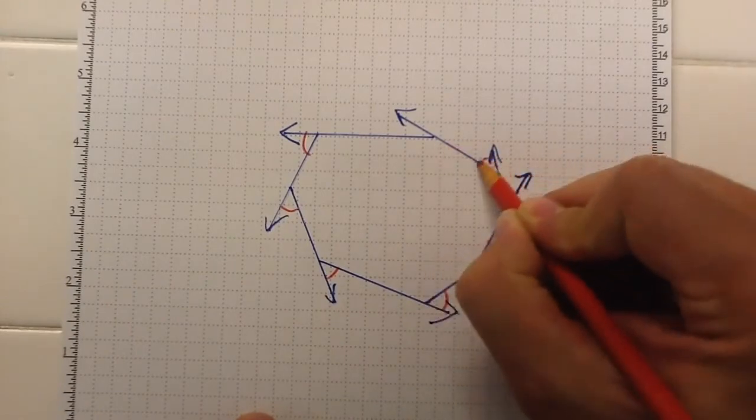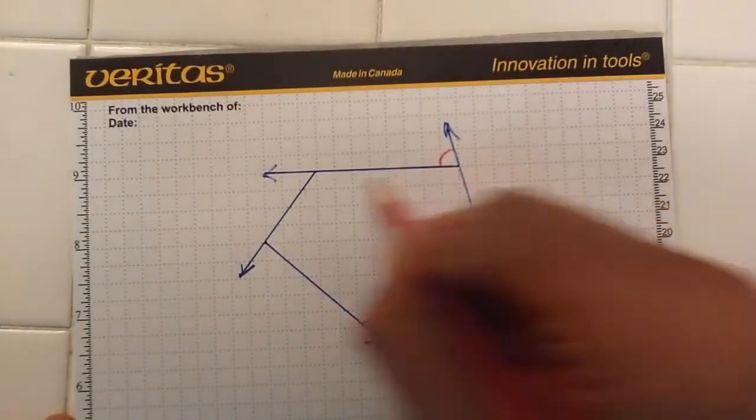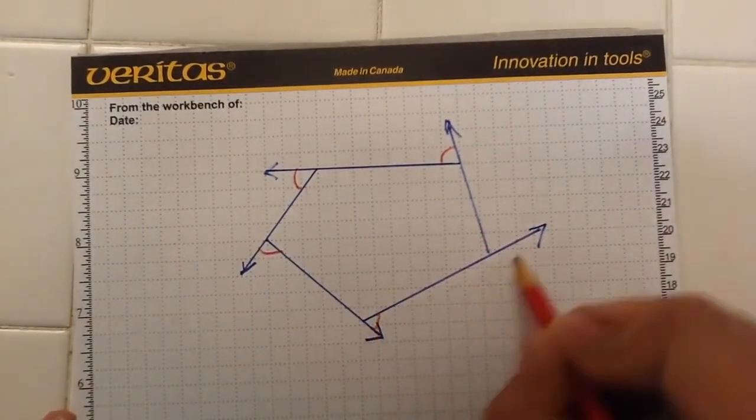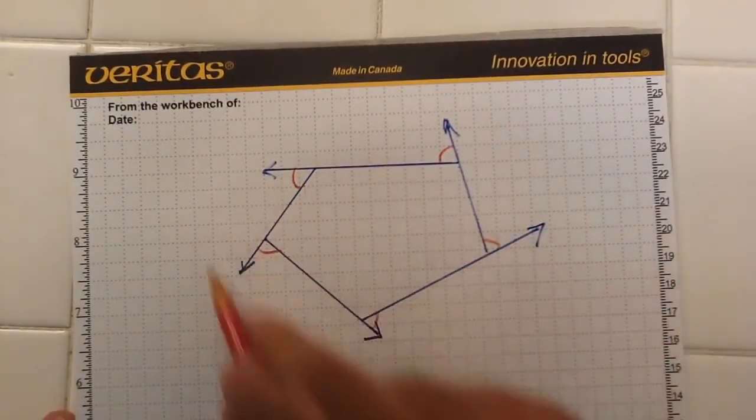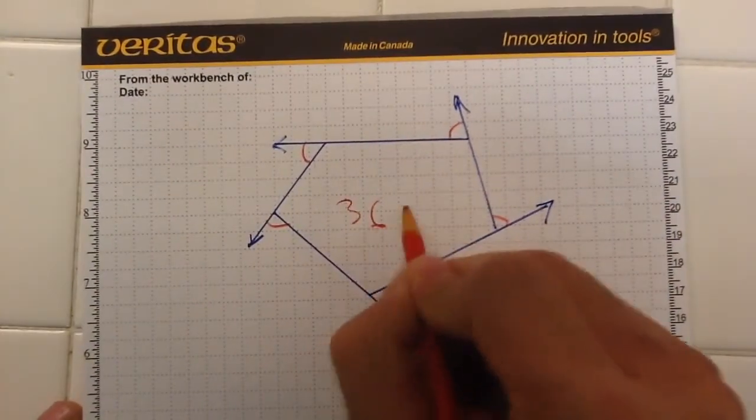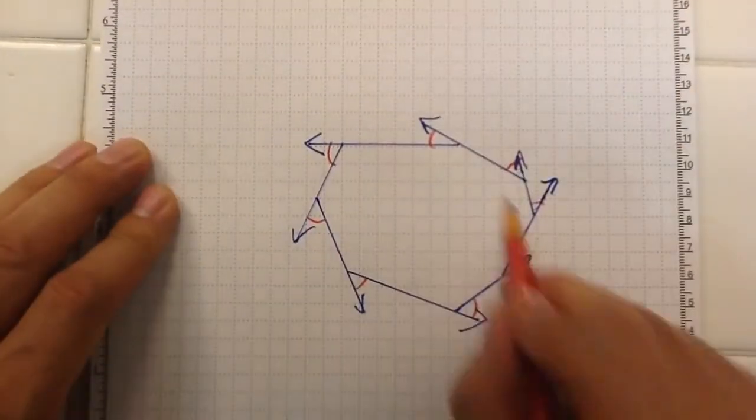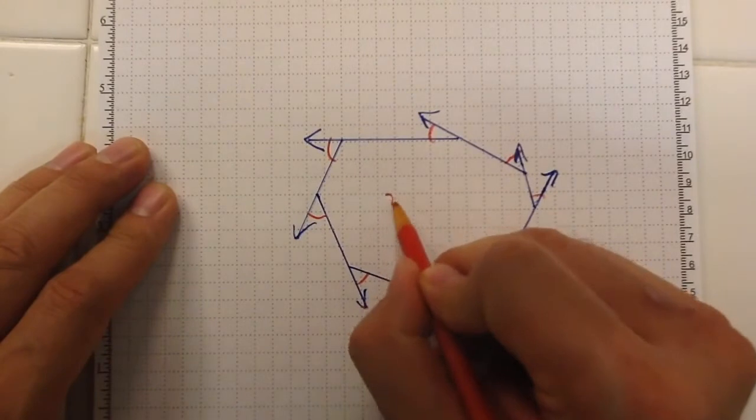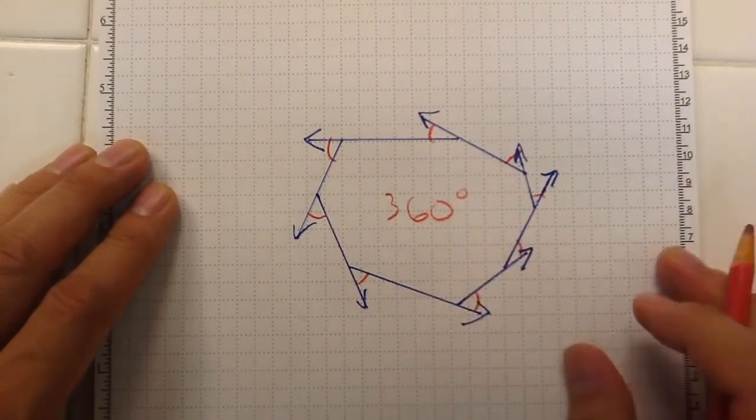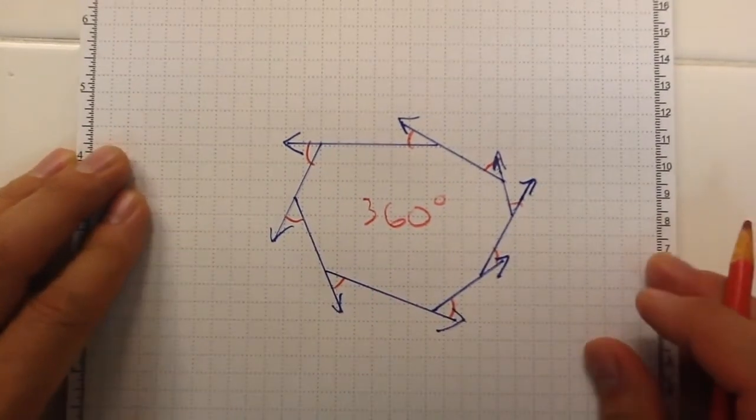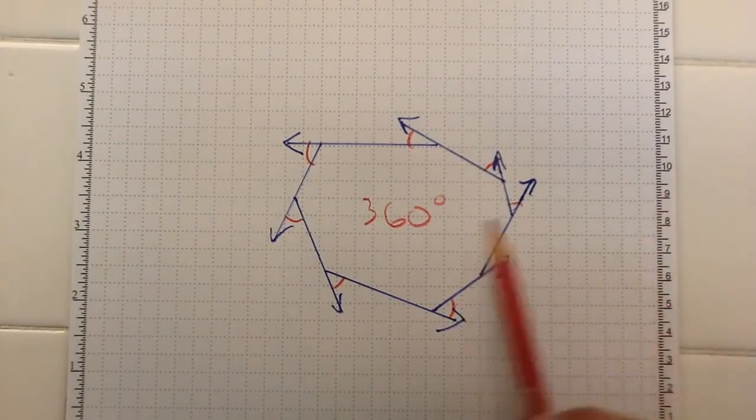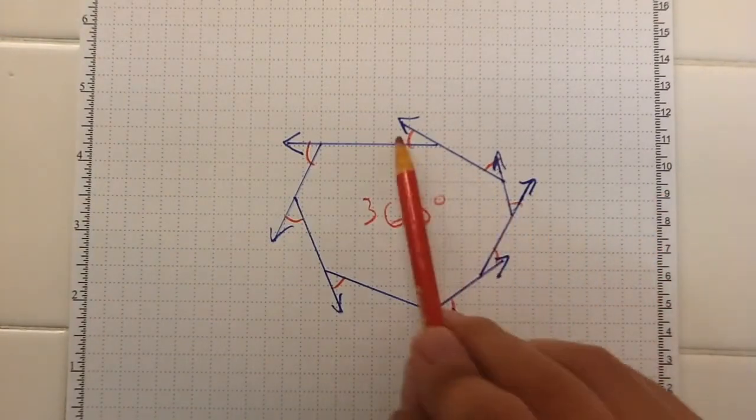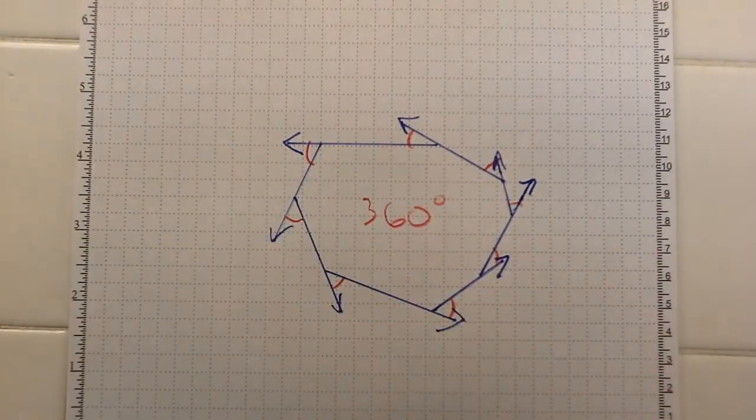Despite the fact that there's more angles here than up here, it just means that these must be larger angles since there's only five of them to add up to 360 degrees, whereas these have more angles, but they're smaller, so they still only add up to 360 degrees. So bottom line is it doesn't matter what the shape is. Any convex polygon, the exterior angles will always equal 360 degrees.